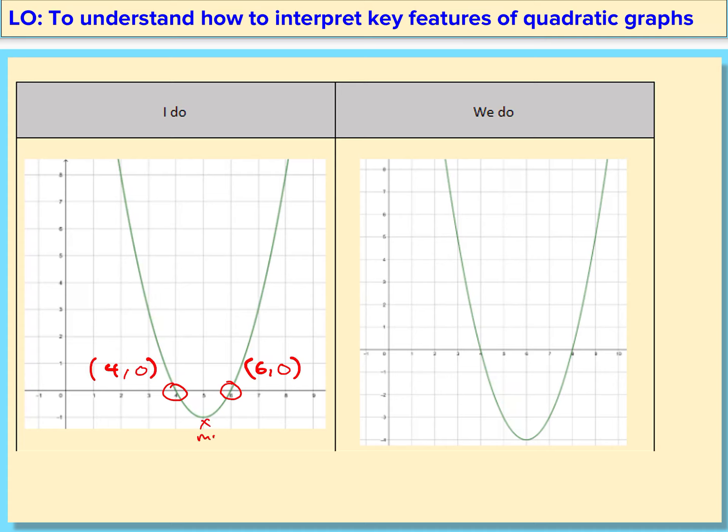Here we're going to actually interpret key features of quadratic graphs. Where the graph actually meets the x-axis is where the roots of the graph are. So here are the roots of the graph. We're just going to write the coordinates down of it, and here's the other root of the graph. And this bit is the minimum point because it's the minimum point of the graph. And it's also called the turning point.